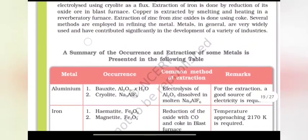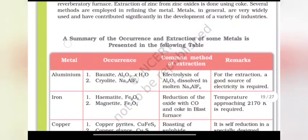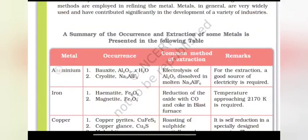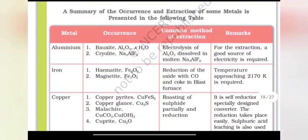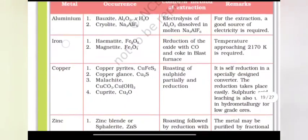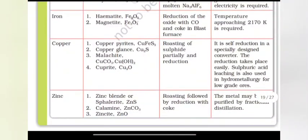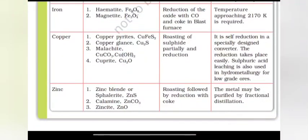Summary of occurrence of some metals. Aluminium is present in the form of oxide ore in bauxite, iron in hematite and magnetite, copper in copper pyrites, copper glance, malachite, and cuprite, and zinc in zinc blende, calamine and zincite.